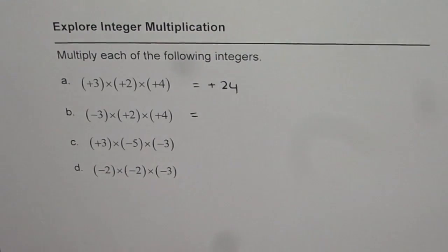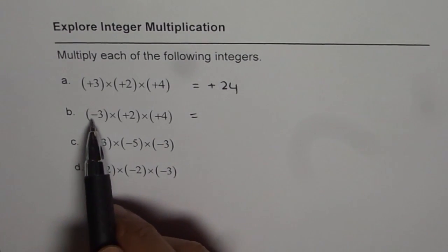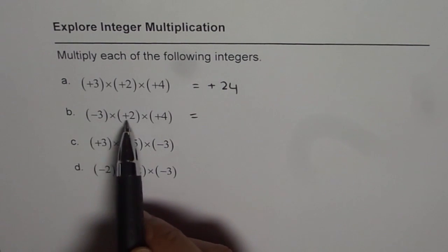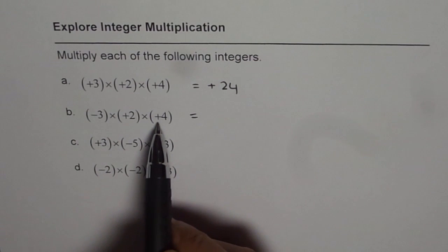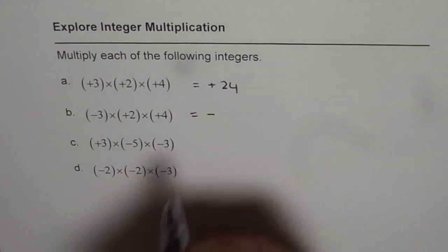Now, let us do the next one. It is minus times plus. These are opposite signs and so they become negative. Now again if I multiply negative with positive, again they are opposite signs. So we get negative result.